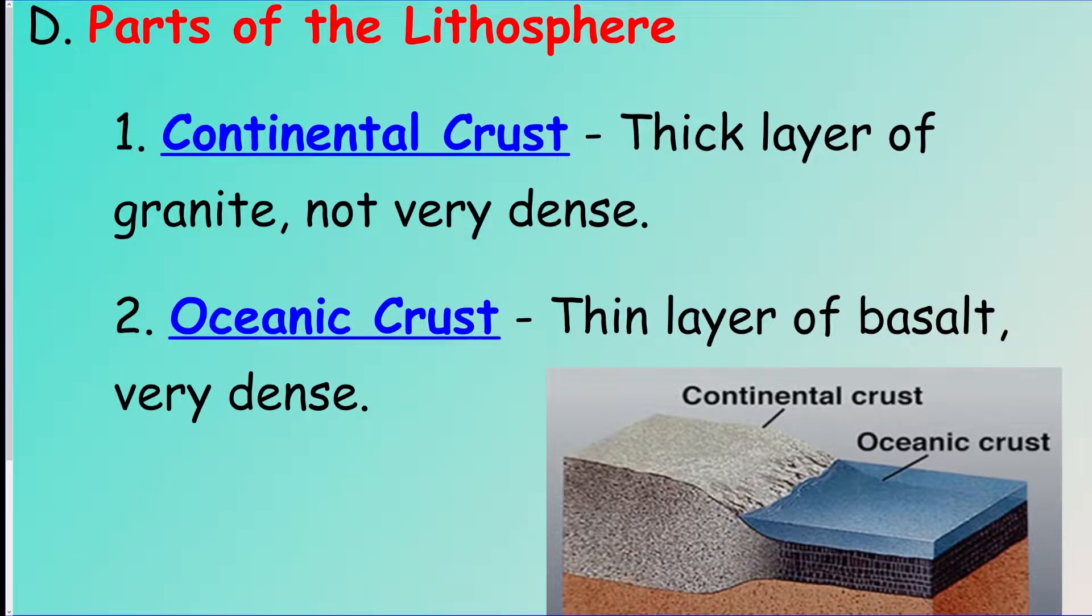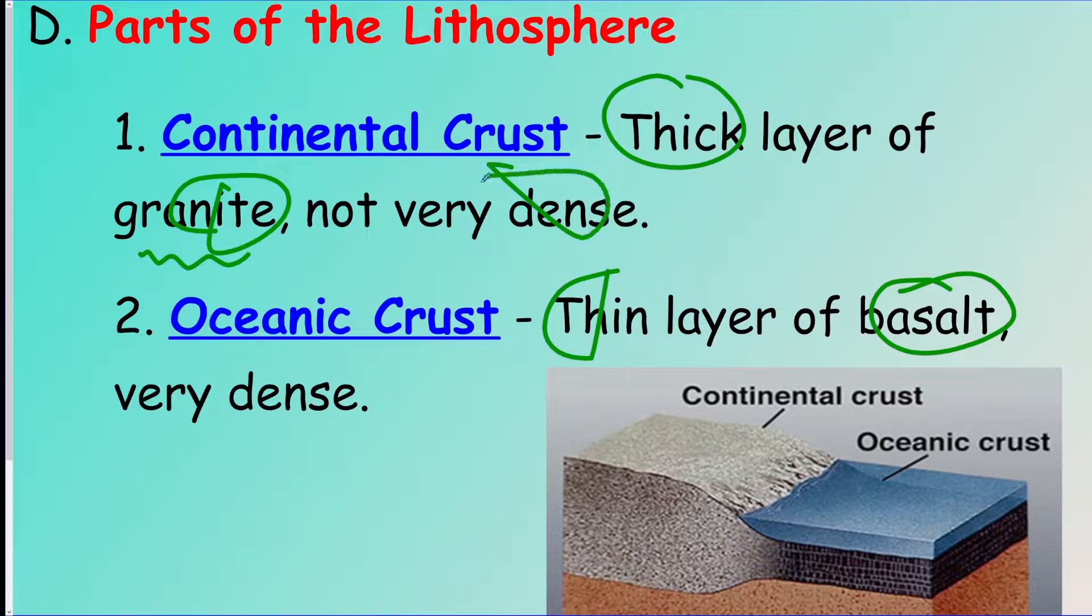Now, in terms of parts, there are two types of crust on the planet. We have continental crust, which is what the continents are made out of. That is made of granite, like in your kitchen countertop maybe, mostly granite, and it's not very dense. Oceanic crust is very, very thin, which is the opposite of the continental crust. Continental crust is very thick, so these are like opposites here, thick and thin. This one's made of granite, as opposed to oceanic being made of basalt. And continental is not very dense, while the oceanic crust is very dense.